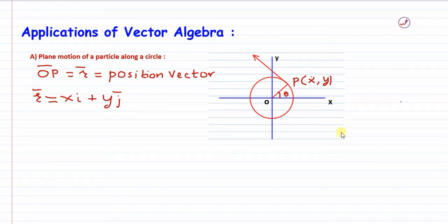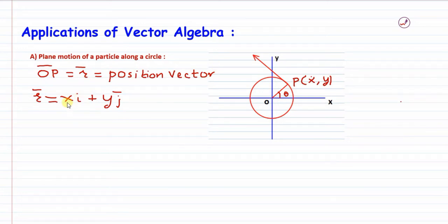Today we will see some application part of vector algebra. Here we have the vector OP, which is nothing but the position vector r-bar, as shown. This OP, which is the position vector or r-bar, has components x-i plus y-j, where x and y are coordinates, i is the unit vector along the x-axis, and j is the unit vector along the y-axis.